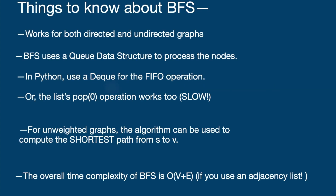Here are some things you need to know about breadth-first search. It works very well for both directed and undirected graphs. BFS uses a queue data structure to process the nodes. In Python, the FIFO operation can be easily achieved by using a double-ended queue from the collections library, and you can use the popleft method to pop the first node from the queue.